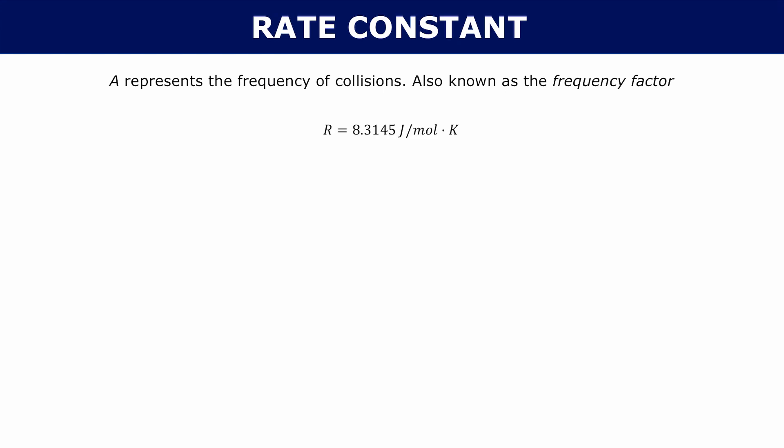The next term is R — that's your gas constant. It's 8.3145 joules per mole times Kelvin. And then T is your temperature in Kelvin — it's absolute temperature.